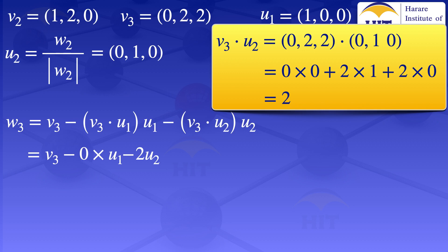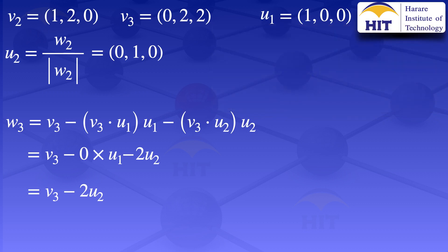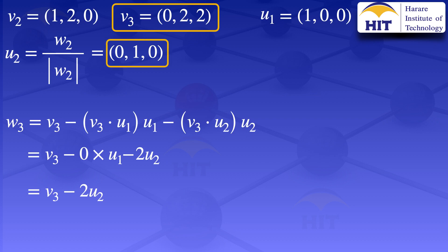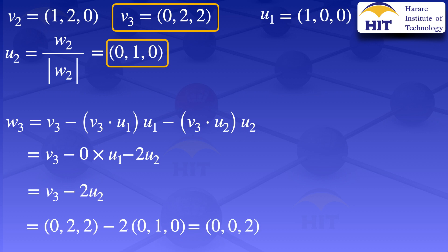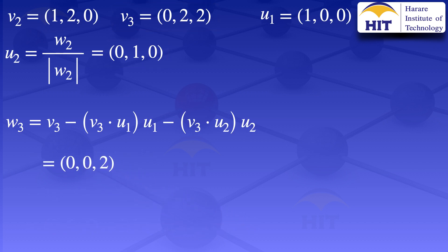With 0·U1 being zero, W3 simplifies to V3 minus 2·U2. Substituting the values, we have (0, 2, 2) minus 2·(0, 1, 0). 2·(0, 1, 0) = (0, 2, 0). Subtracting from (0, 2, 2) gives W3 = (0, 0, 2).